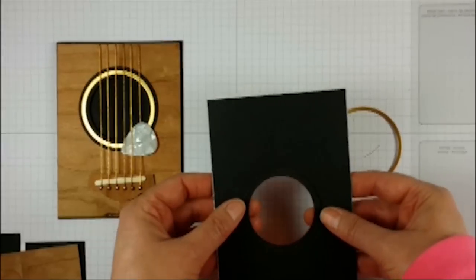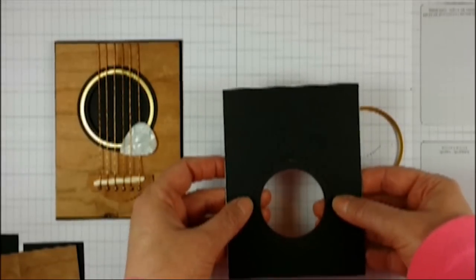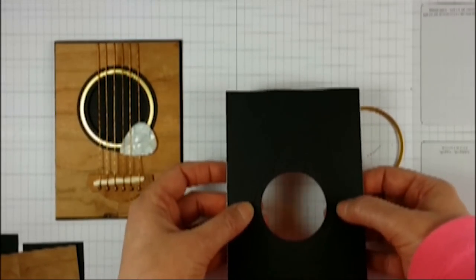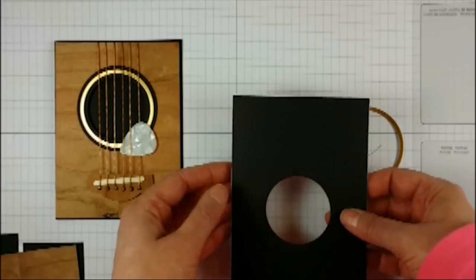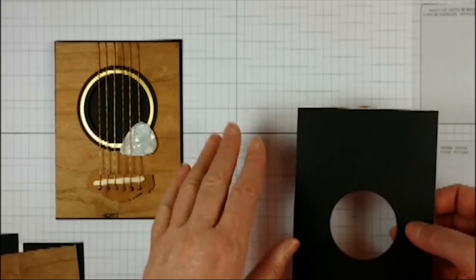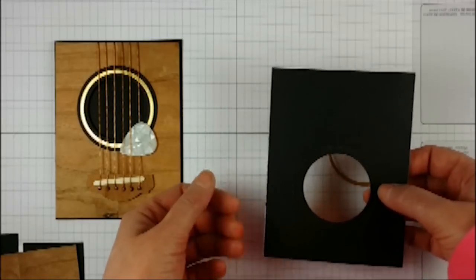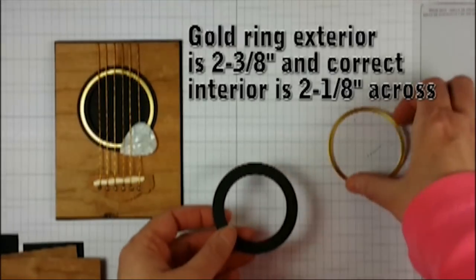I wanted to have a little bit of the frame going inside the circle. The reason why I'm doing that is I wanted to go for a 3D effect so it looked like you could look inside the guitar.